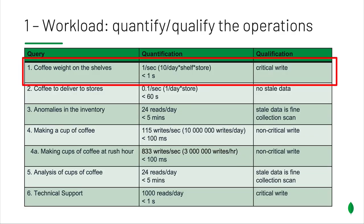Now the next part is to quantify and qualify those operations. Going back to our first query — looking at the number of times an event happens per shelf, the number of shelves per store, and the number of stores — we calculate that it gives us about one write per second, which is obviously not much. We can say that as long as this write is done in one second, the hardware will be fine. We label this write as critical. This is what I call qualification — aspects of the queries themselves. This is a critical write because we don't want to lose that data, whether there's a system failure or a network problem. For those with MongoDB experience, this basically translates to ensuring this write is done with the right majority concern.